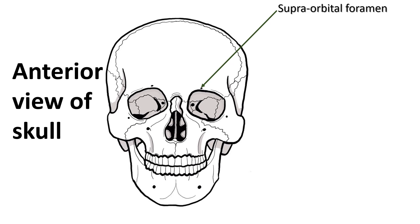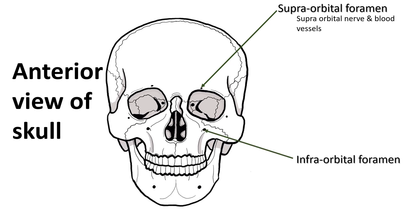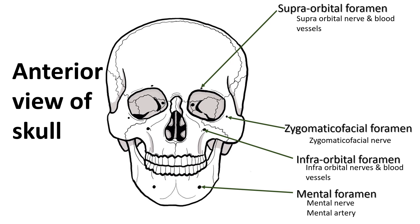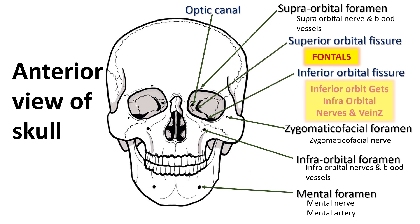The supraorbital foramen is superior to the orbit and transmits supraorbital nerves and vessels. Similarly, the infraorbital foramen is inferior to the orbit and transmits infraorbital nerves and vessels. The zygomaticofacial foramen transmits the zygomaticofacial nerve. The mental foramen transmits the mental nerve, which is a branch of the inferior alveolar nerve, and the mental branch of the inferior alveolar artery. You can often identify the structures passing through a foramen just from its name.